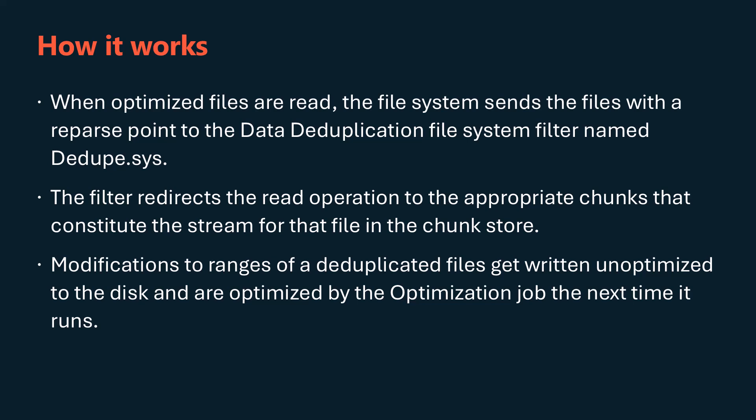Once enabled for a volume, data deduplication runs in the background to identify repeated patterns across files and seamlessly move those portions or chunks with special pointers called reparse points that point to a unique copy of that chunk. When optimized files are read, the file system sends them to the data deduplication file system filter named dedupe.sys, which redirects the read operation to the appropriate chunks in the chunk store. Modifications to ranges of a deduplicated file get written unoptimized to disk and are optimized by the optimization job the next time it runs.